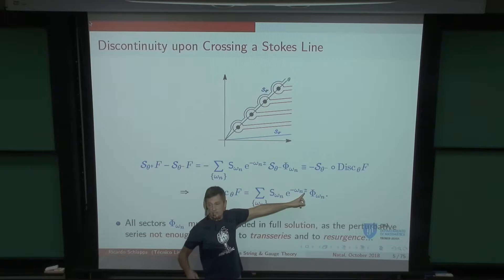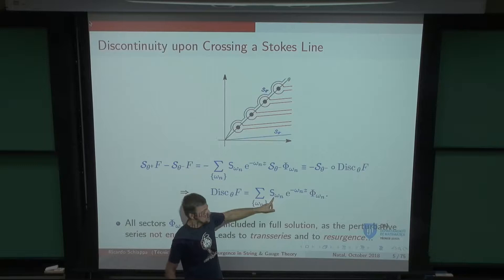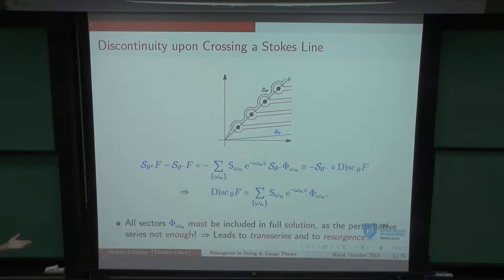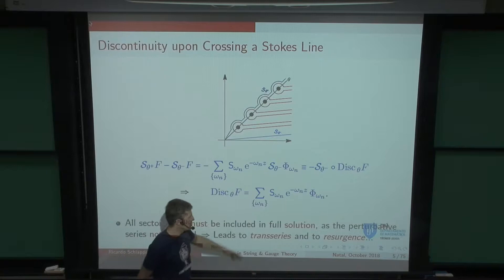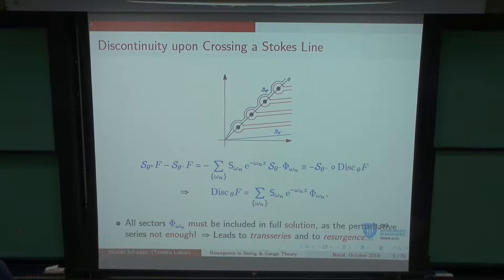Remember that Z, by coupling, is large, so these guys are exponentially suppressed. The art of writing stuff as the Borel of something else makes the something else appear, and this is all up to some constants. The punchline is that all these sectors must be included. The perturbative series is not enough, and this is what leads to trans-series — basically putting everybody together — and resurgence, which says there are many sectors but they are all related to each other.